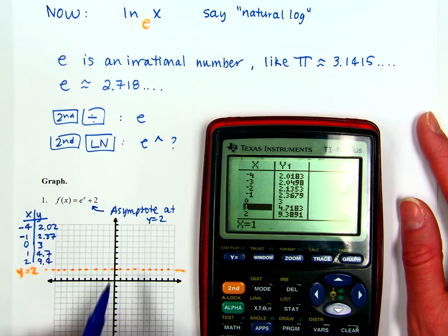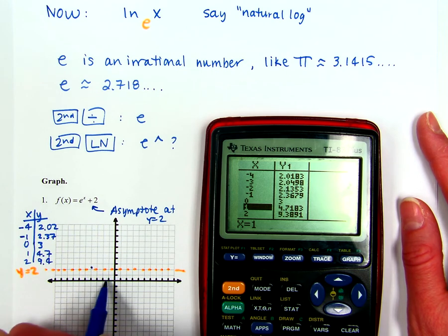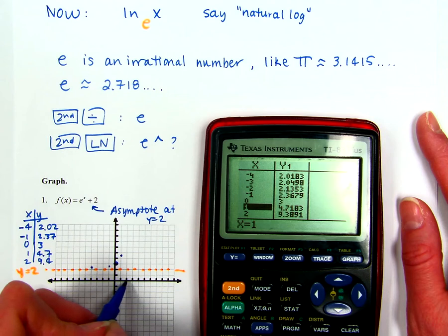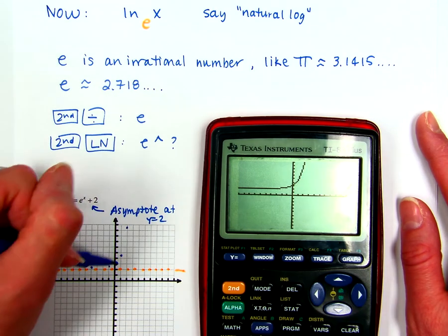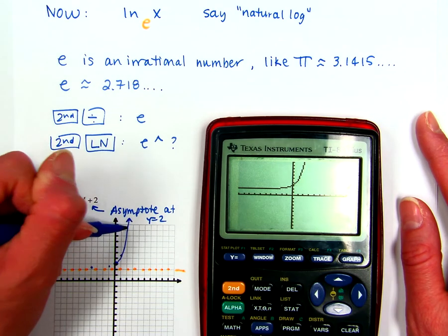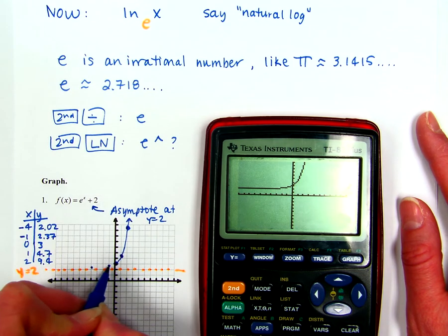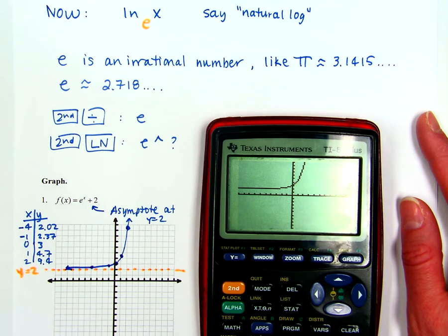So we've got negative 4, go up about 2, a little bit above 2. Negative 1, we go 2.37. Then 0 is 3, 1 is 4.7, and 2 is 9.4. Connect those points and make sure it looks like what you have on your calculator. Notice that the graph never touches the asymptote — it just gets really, really close to it.